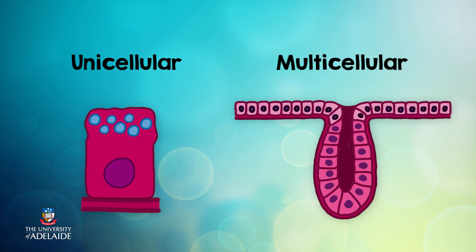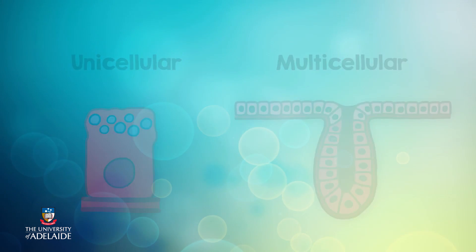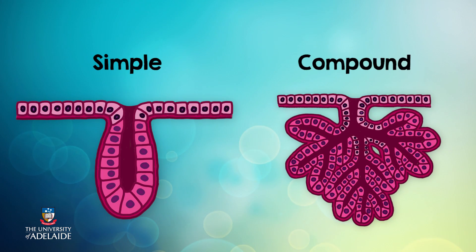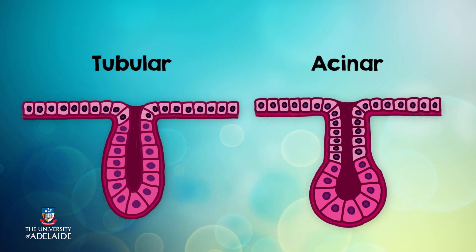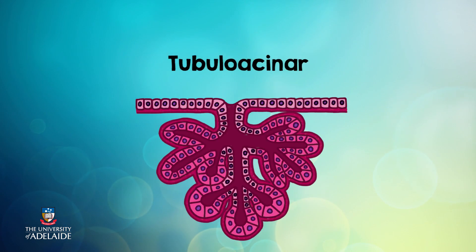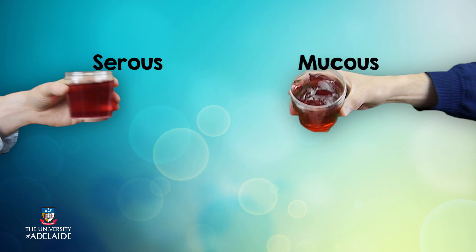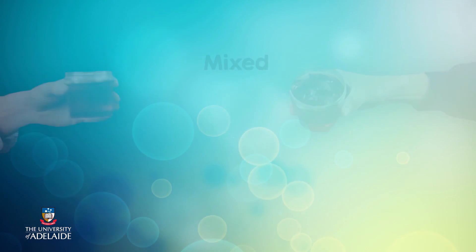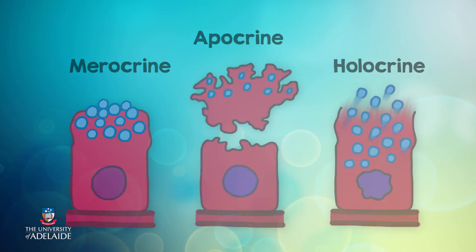So in summary, exocrine glands can be classified as unicellular or multicellular, simple or compound, tubular or acinar or both tubuloacinar, serous, mucus or mixed, and either merocrine, apocrine or holocrine secretion.